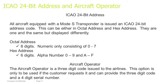ICAO 24-bit Address and Aircraft Operator. All aircraft equipped with a Mode S transponder is issued an ICAO 24-bit address code. This can be either an octal address or hex address. They are one and the same, but displayed differently — meaning you can convert an octal address into a hex address and vice versa.